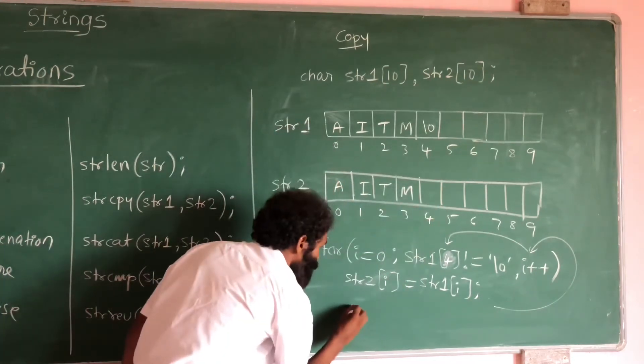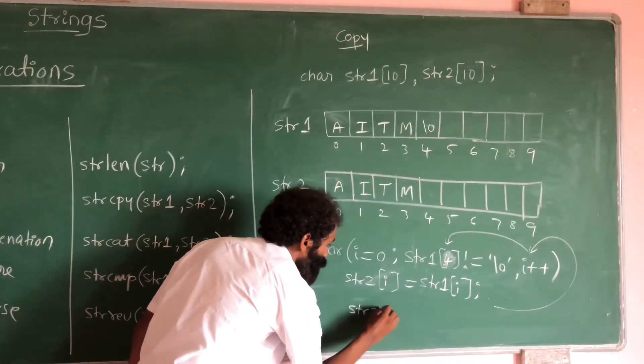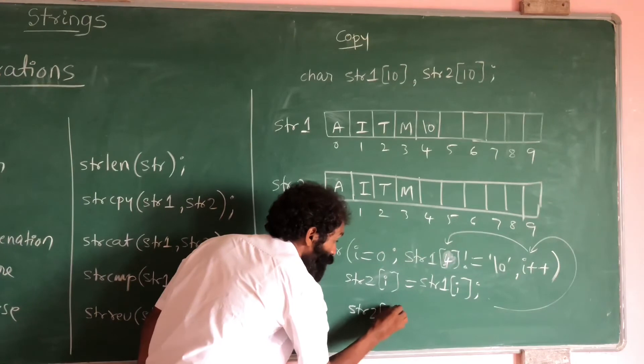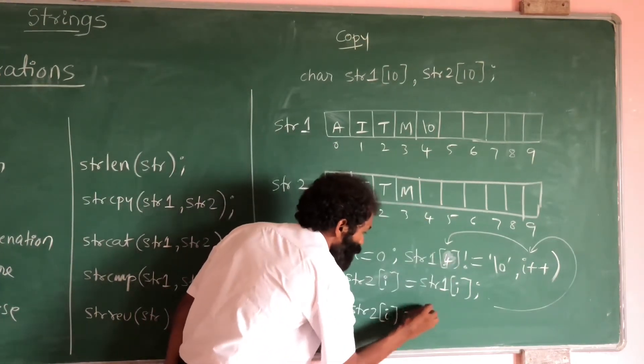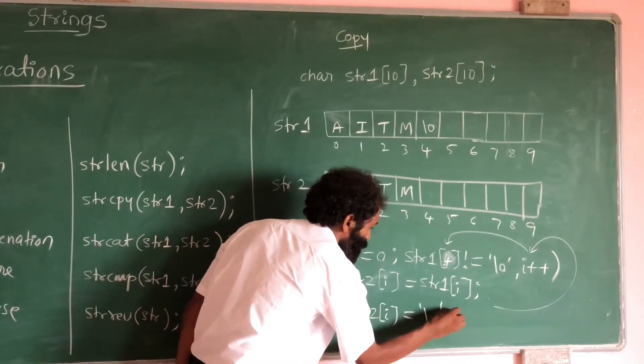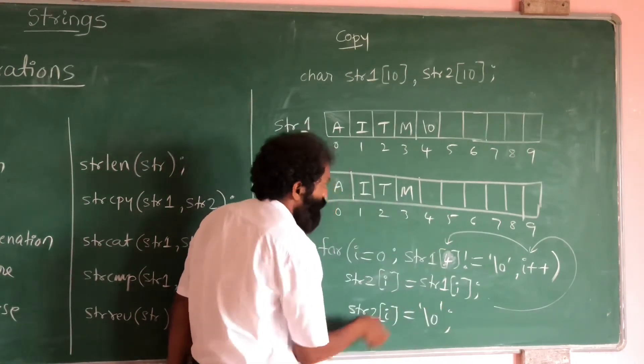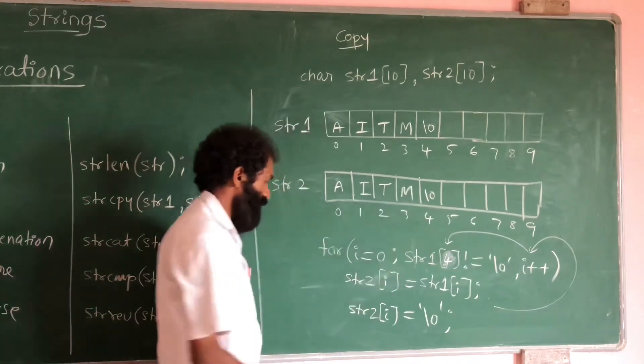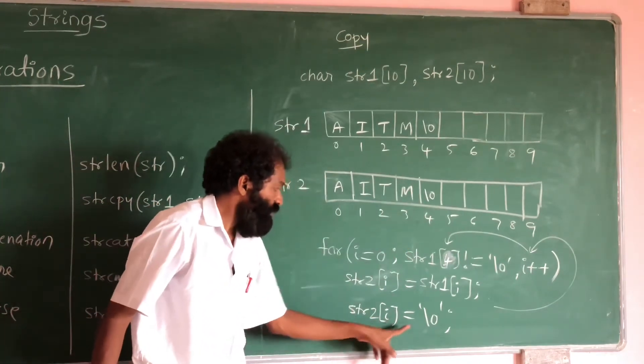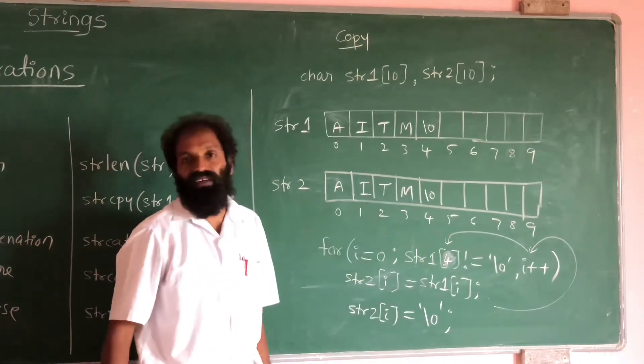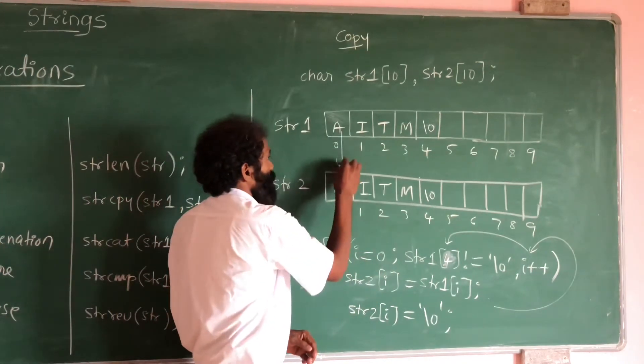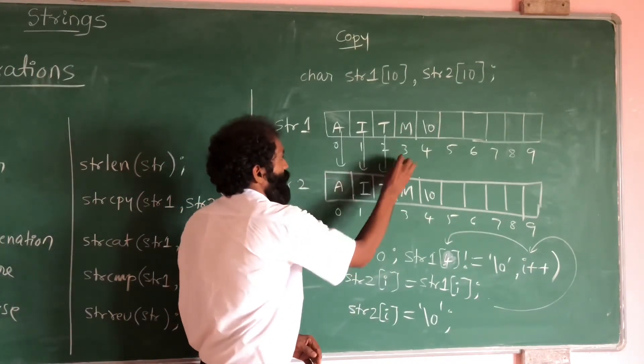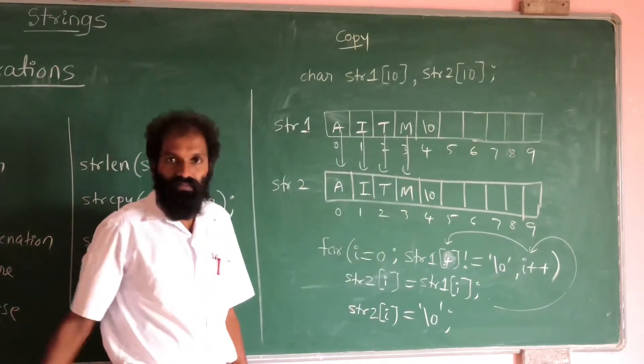That is why string 2 of, what is I value? 4. I value is 4, right? So is equal to null character. This statement will come here. String 2 of 4 is equal to null character. It will come here. In this way, we can copy all the characters.